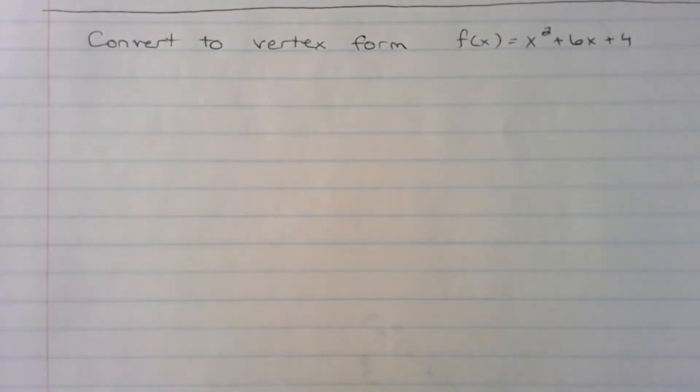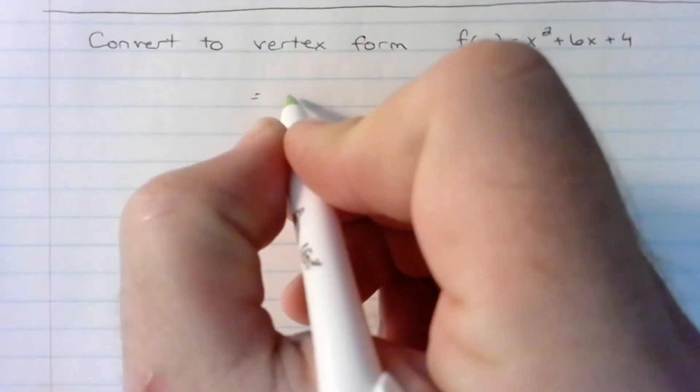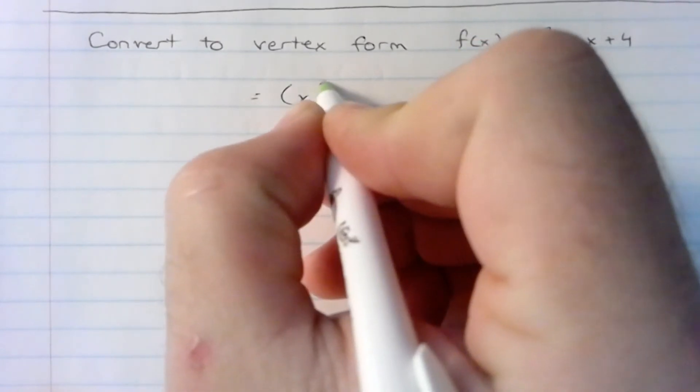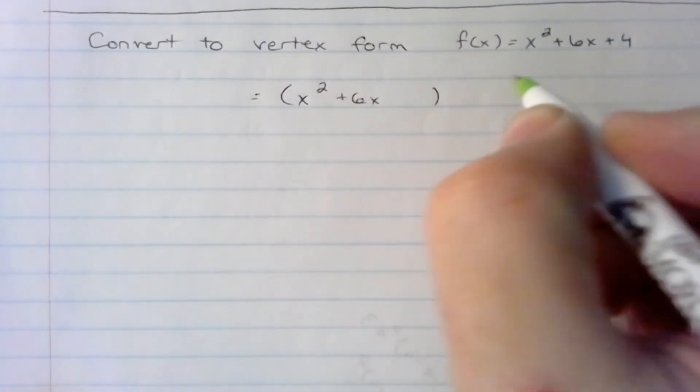So what we do is, from the original function, we're going to put parentheses, leave a space, and the plus 4 will be out here.